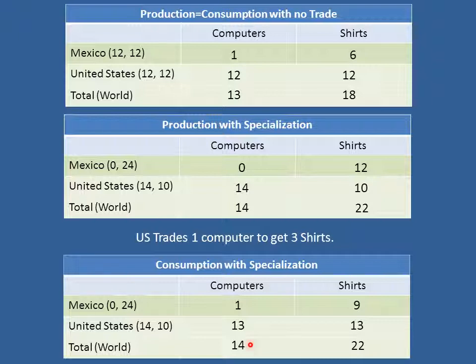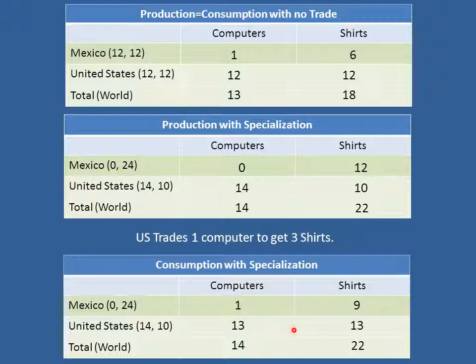Now let's take a look. Total production is the same. But notice what has happened to consumption with specialization and trade compared to when there was no trade. When there was no trade, Mexico consumed one computer and six shirts. Now they're consuming one computer and nine shirts — Mexico is better off by three shirts. The United States was consuming 12 computers and 12 shirts; now they're consuming 13 of each. So the United States is better off by one computer and better off by one shirt. Pretty remarkable — trade, according to comparative advantage, has made both countries better off.